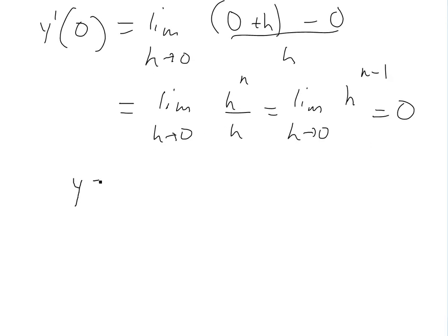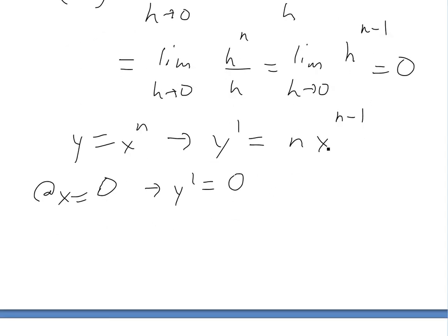So if you have y equals x to the n, the general power rule is y prime equals n x to the n minus 1. And if you have x equals 0, at x equals 0, we have y prime equals 0. Even if you were to plug this in, it's going to be still 0. Even if we plug it into this one right here, we're going to have n times 0. So this one still matches. The general rule applies.